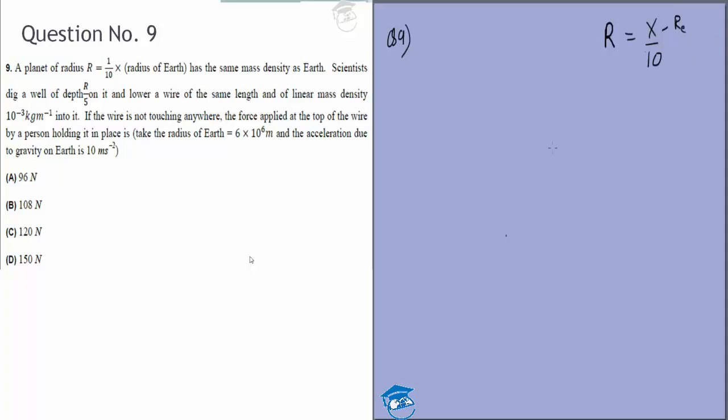Scientists dig a well of depth r by 5 in it, so this is the planet of radius r. You dig a well of depth r by 5 and lower a wire of the same length and of linear mass density 10 to the power 3 into it.